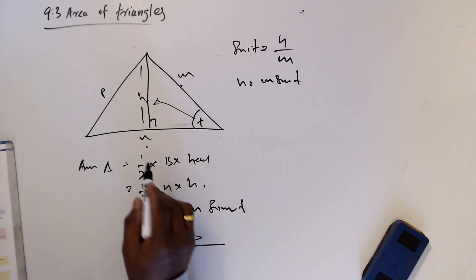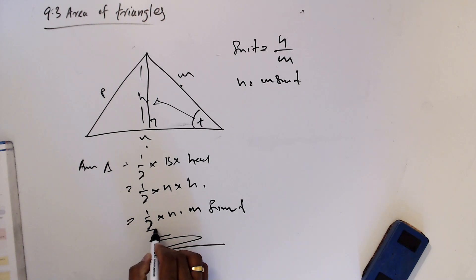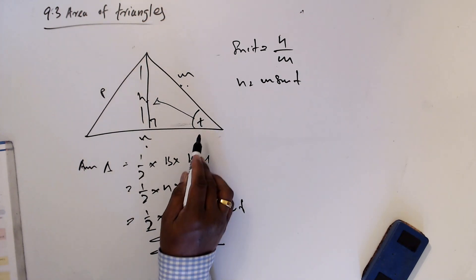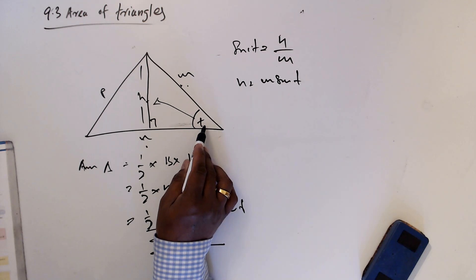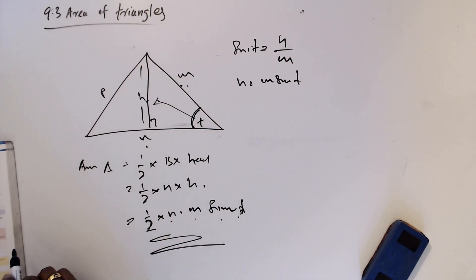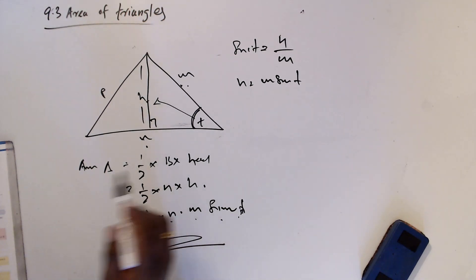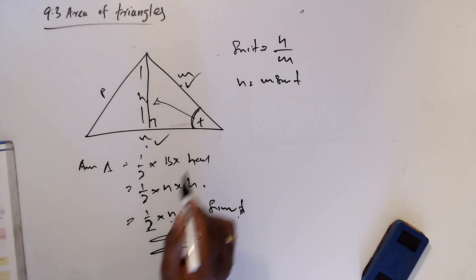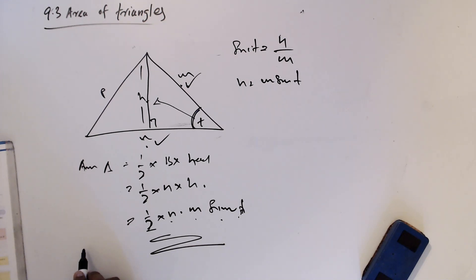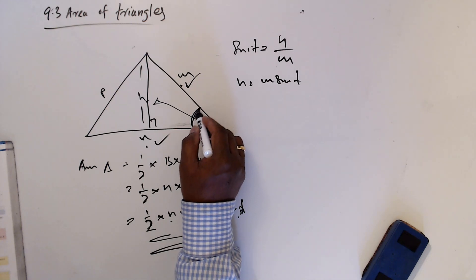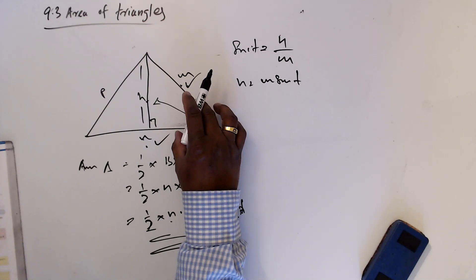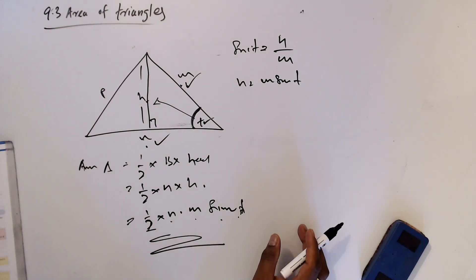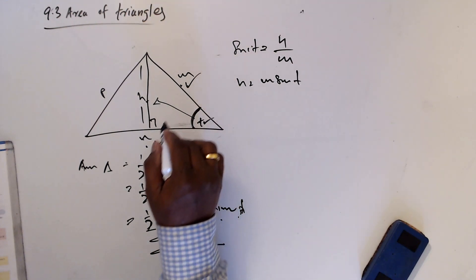Did you notice that n and m are the two sides that form angle T? In other words, to write the area using this formula, you need to know two side lengths and the angle between them. Those two sides must be the ones that make the angle — the angle should be in between the two known lengths.